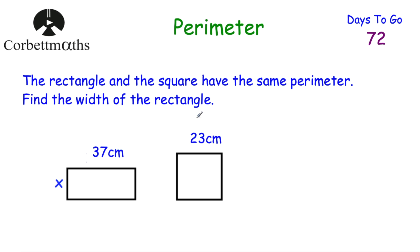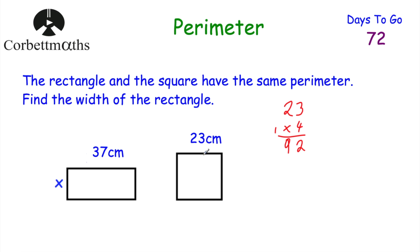A rectangle and a square have the same perimeter — find the width of the rectangle. First, find the perimeter of the square. Each side is 23 cm, so 23 × 4 = 92 cm. The perimeter of the square is 92 centimetres, and so the perimeter of the rectangle is also 92 centimetres.